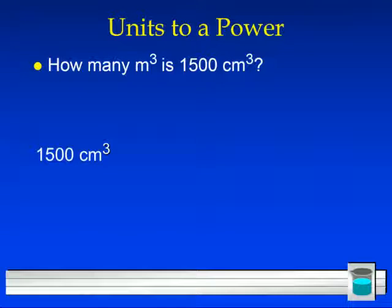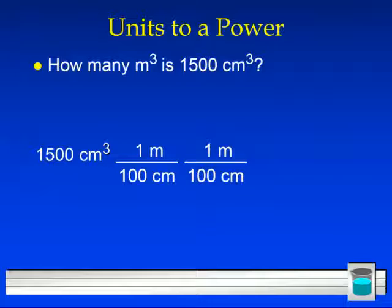But, for now, we are moving on to looking at units that have powers. So, we have meters cubed right here. Meters cubed, meters to the third. That's meters times meters times meters. And then we have 1,500 cubic centimeters. How many meters cubed is 1,500 centimeters cubed?